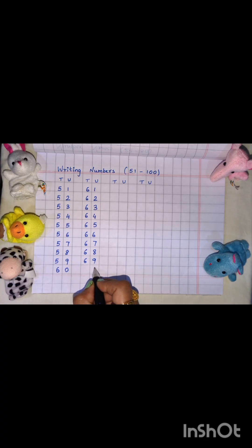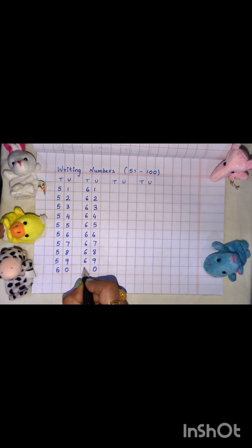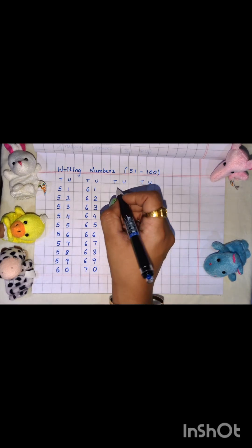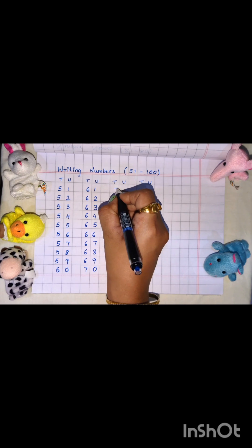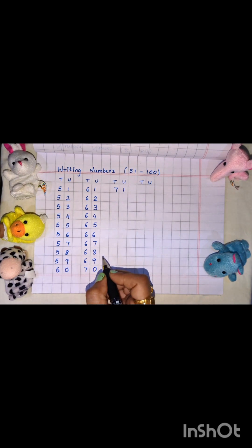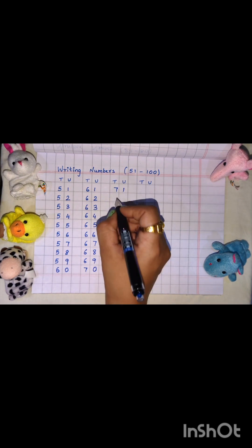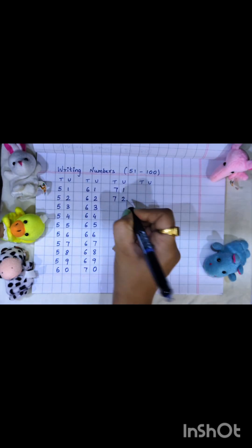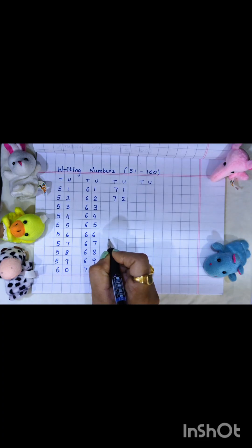Then after 9 comes 0. Then 7, 0, 70. After 70 comes 7, 1, 71. 7, 2, 72.